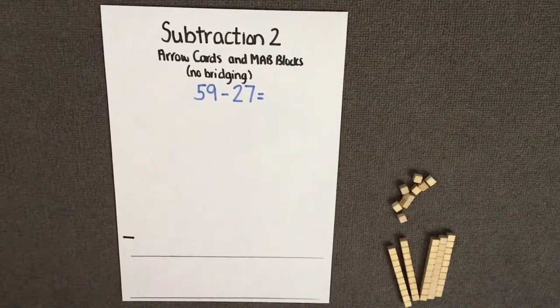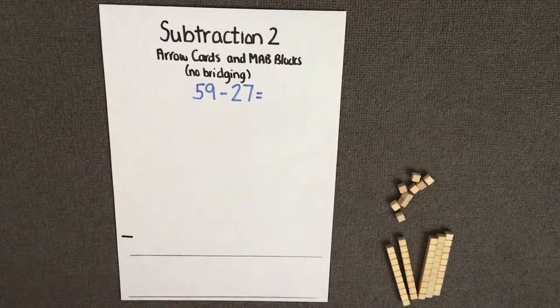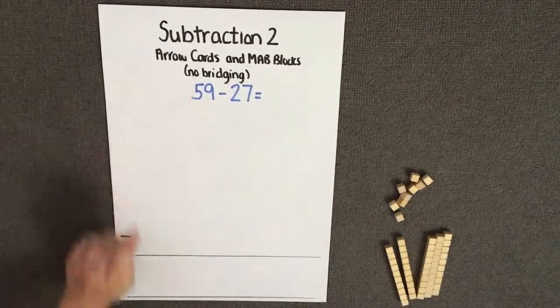The first thing we need to do is set out our algorithm. We need to use MAB blocks to represent our largest number, which in this case is 59.